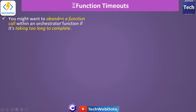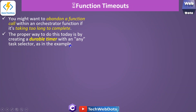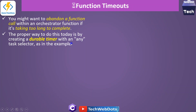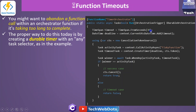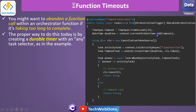Now let's talk about function timeout. You might want to abandon a function call within an orchestrator function if it takes too long to complete — maybe your function is trying to achieve a result but taking too much time. The proper way to handle this is by creating a durable timer with a task selector. In this example, we first create a timeout — a TimeSpan of 30 seconds — and fetch the current UTC time from context.CurrentUtcDateTime, then calculate the deadline.